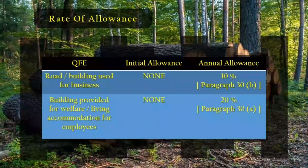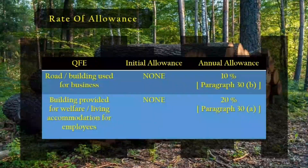Rate of allowance for forest expenditure: road or building used for business — initial allowance: none; annual allowance: 10% (Paragraph 30B). Building provided for welfare or living accommodation for employees — initial allowance: none; annual allowance: 20% (Paragraph 30A).